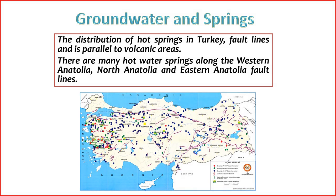Hot springs in Turkey are distributed across various regions, with many of them located along fault lines and in proximity to volcanic areas. Some notable regions with a concentration of hot springs include: 1. Western Anatolia — this region is known for its geothermal activity, and several hot springs can be found here. 2. North Anatolia — similar to Western Anatolia, North Anatolia also has hot springs associated with its geological features. 3. Eastern Anatolia — this region, characterized by its geological activity, is home to hot springs with therapeutic properties. These hot springs are popular for relaxation and for their potential health benefits due to the mineral content and geothermal properties of the water.